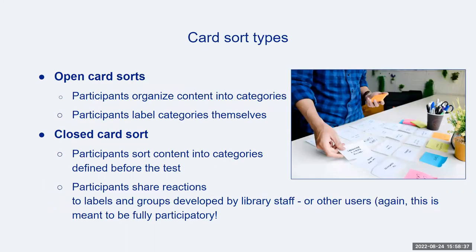So I promised we would talk more about open and closed card sorts. These are often used to complement each other. Open card sorts require participants to organize content into categories and then label the groups of content using language that makes sense to them. Open card sorts are especially useful at the start of a project and are best for identifying broad content categories that make sense to users. If time is an issue, you can opt not to have participants provide labels for the categories. Understanding more fully how your users categorize content on your site is the primary goal of this test.